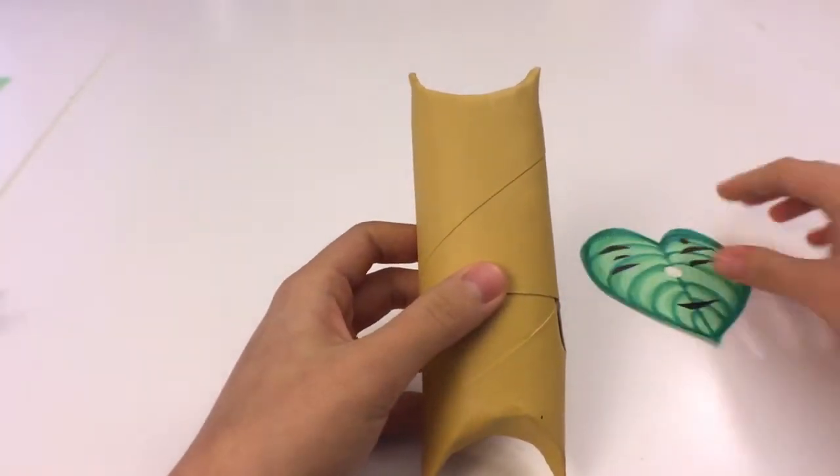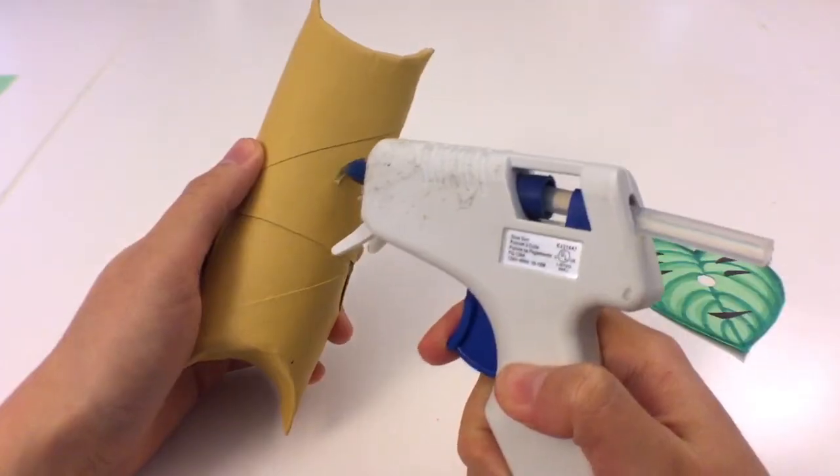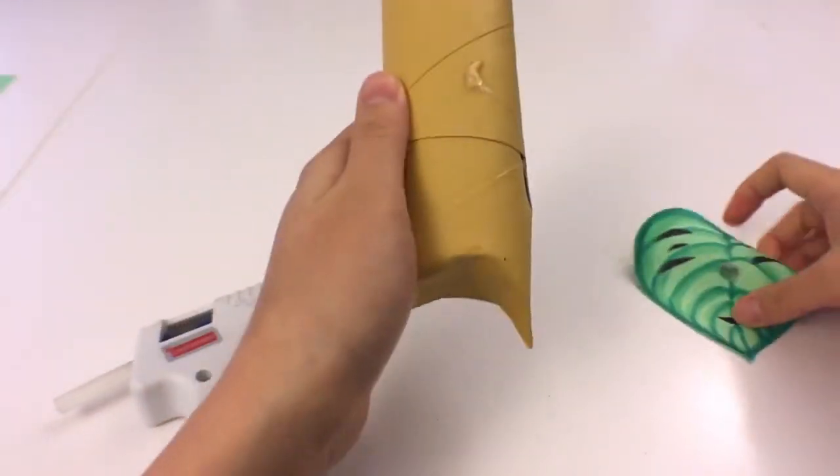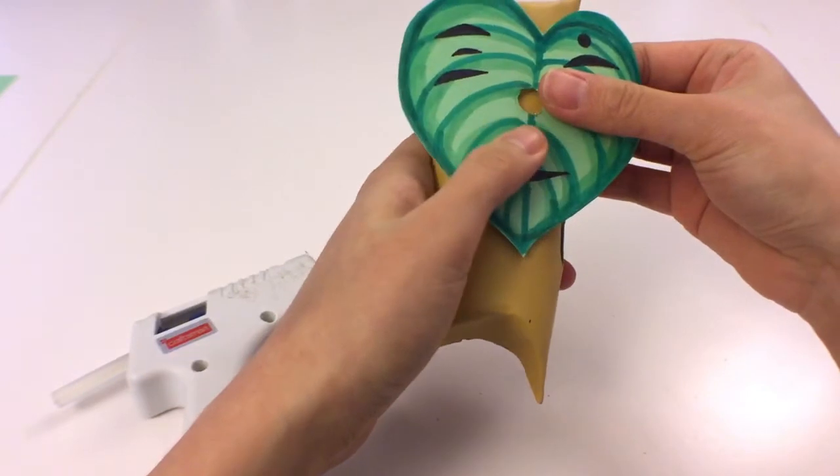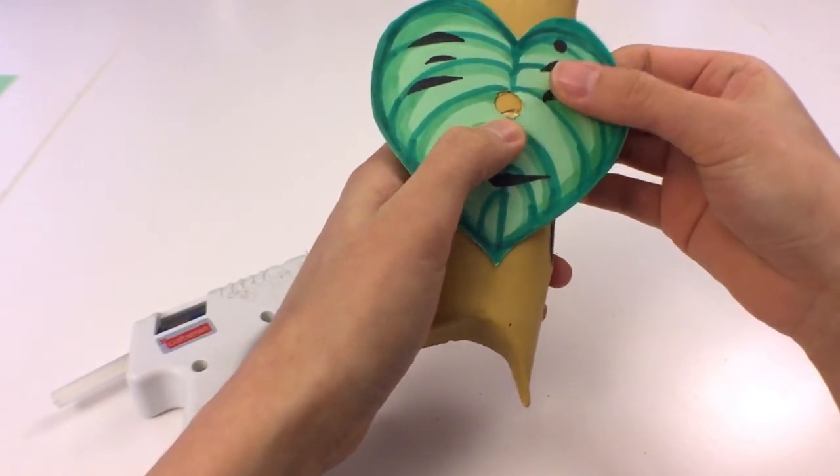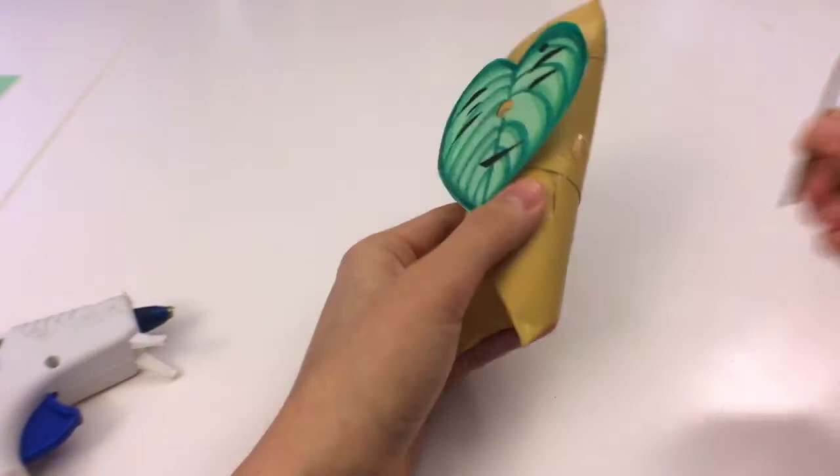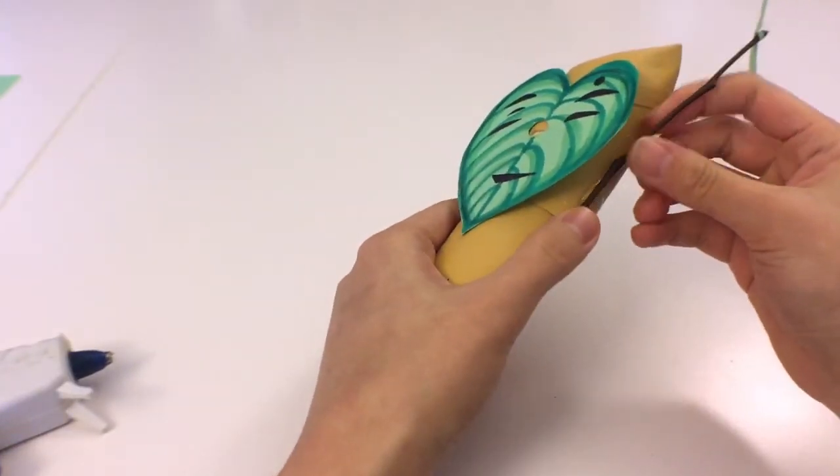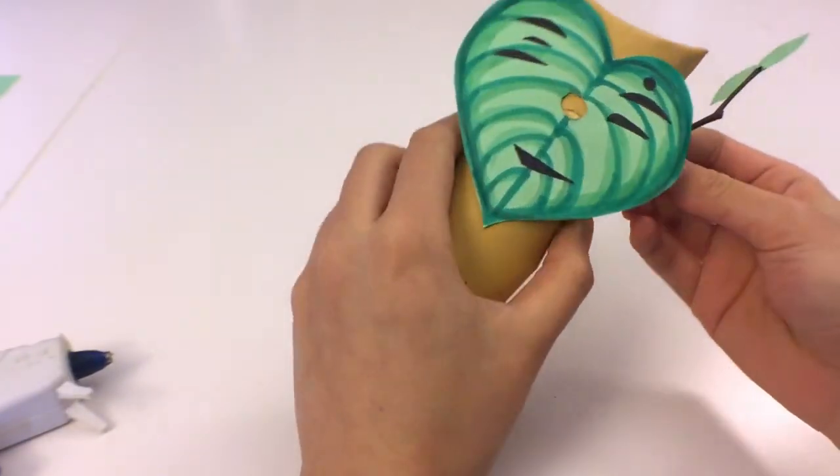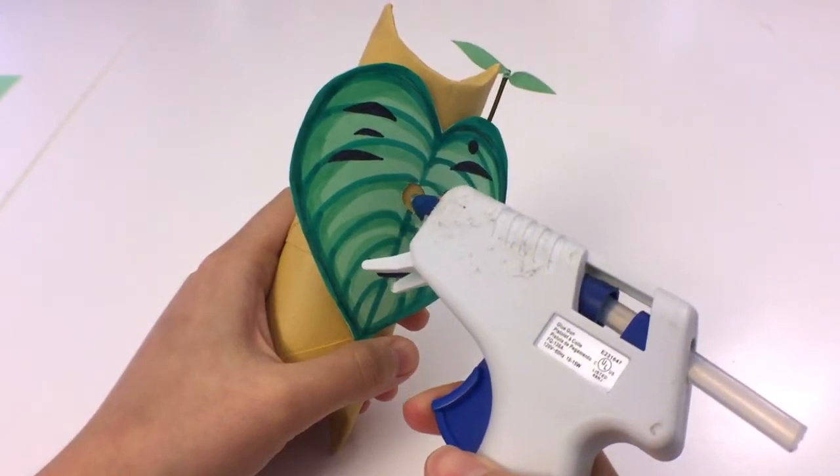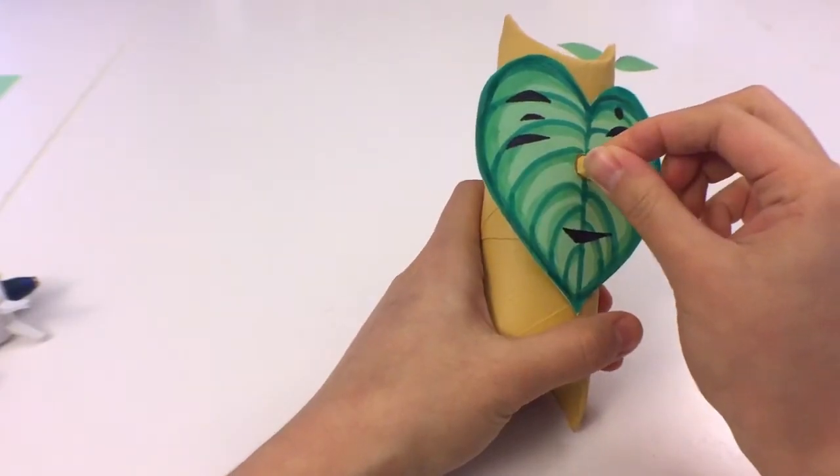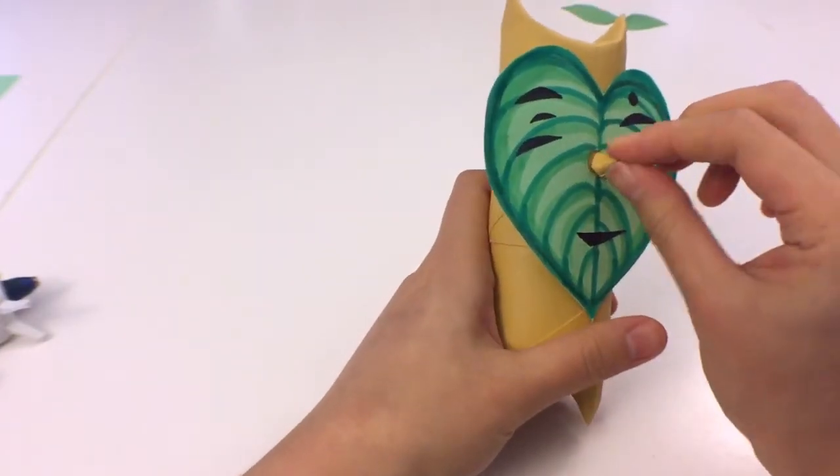Now take the leaf that you drew previously and glue that in place as well. Also glue in place that little tree branch you have to the side. I rolled up some excess paper that I had into a little cone and made it the nose and glued that to the circle that you left for the nose.